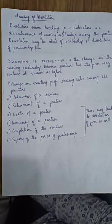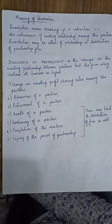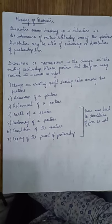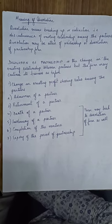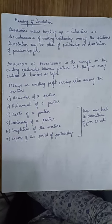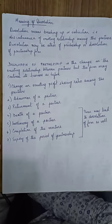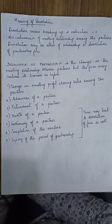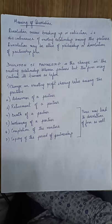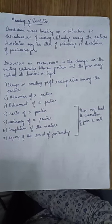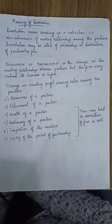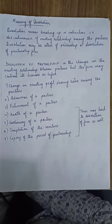Good morning students. Today as part of our discussion we are having the chapter of dissolution. In the earlier chapters of partnership accounts we have done change in profit sharing ratio, admission, retirement, and death — that was part of reconstitution of partnership where the relationship between the partners had changed but the firm continued. Here in this chapter we will find the dissolution, where we have to discontinue the partnership firm itself.